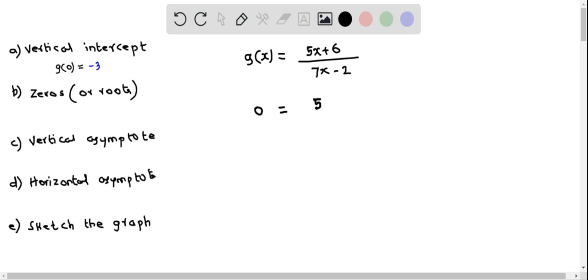So when we replace g(x) equal to 0, this becomes 0 equals 5x plus 6 over 7x minus 2. Now we multiply both sides by 7x minus 2. Therefore, 0 times 7x minus 2 is 0 and this equals 5x plus 6.